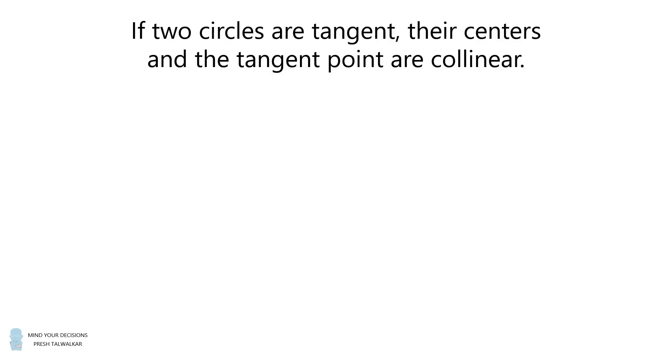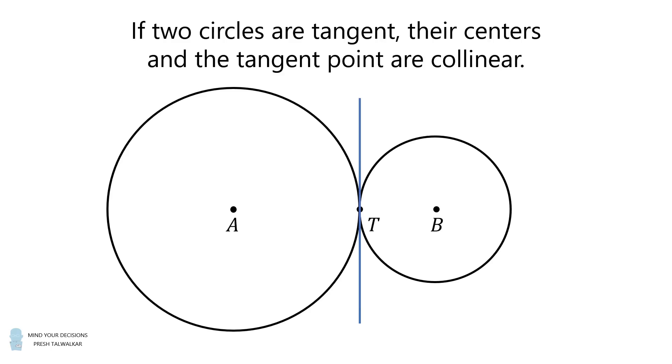Let's review the following geometric concept. If two circles are tangent, their centers and the tangent point are collinear. Suppose we have circles A and B that are tangent. Let T be the tangent point. Draw the line through T. By the given information, AT is perpendicular to the tangent line, and BT is also perpendicular to the tangent line. Therefore, ATB is a straight line segment. This is true for both externally and internally tangent circles.